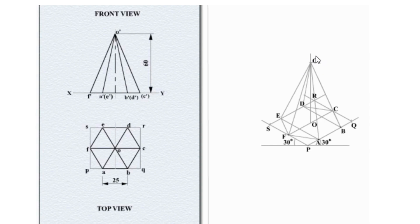Draw a vertical line from O to 60mm to get O-dash. Now join O-dash to each and every corner of the hexagon. The hexagonal pyramid is now ready.